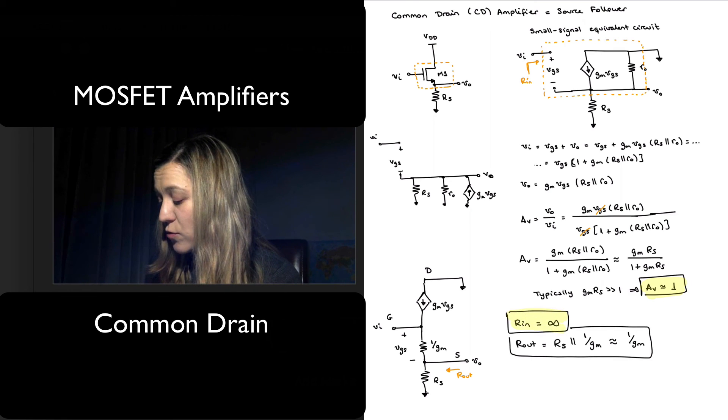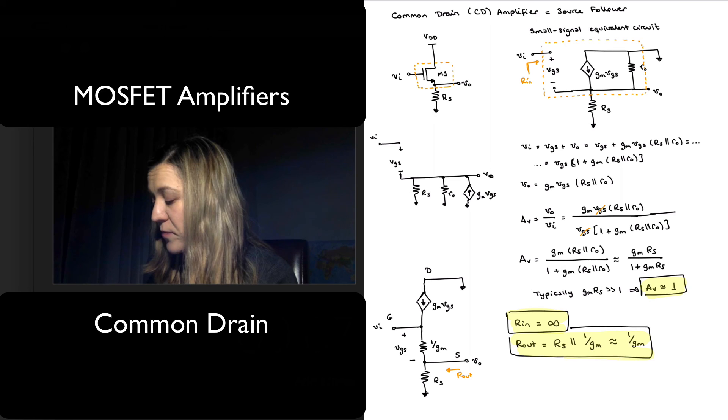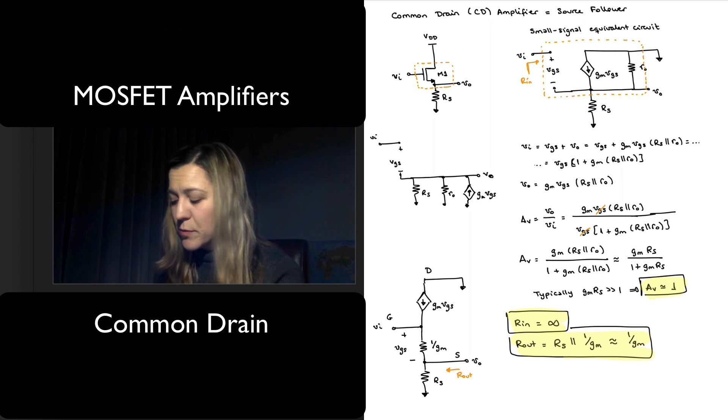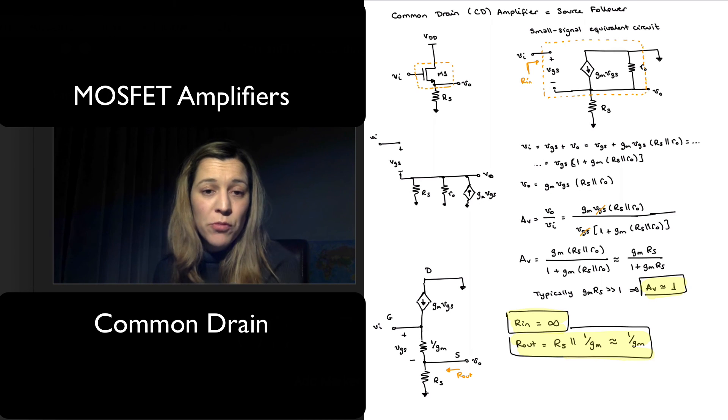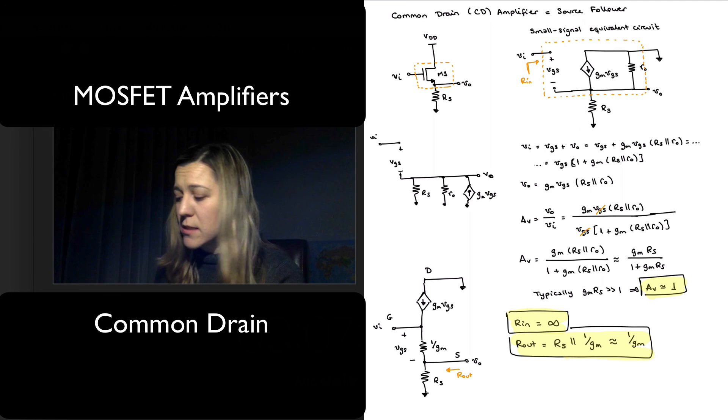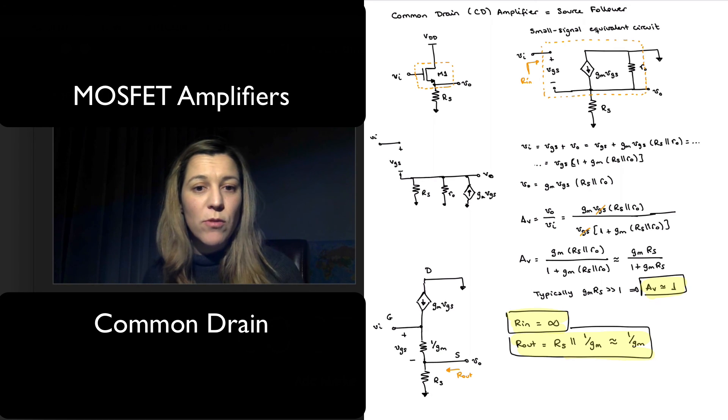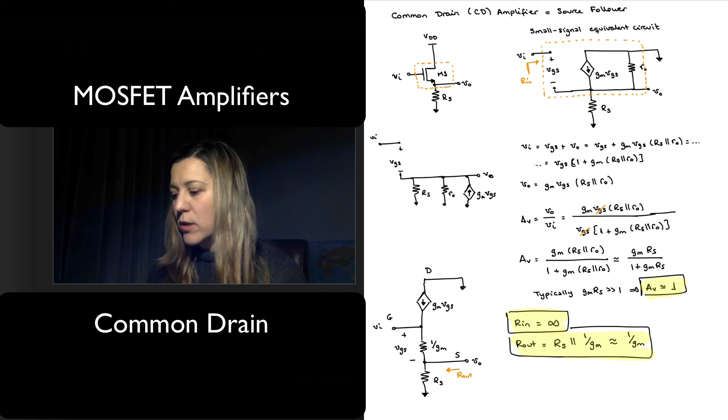Typical uses for this type of amplifier is going to be as a buffer between stages, for example. And that's because it has a very high input resistance, a very low output resistance. The gain is essentially 1. And so as a buffer stage between amplifiers to avoid loading effects, or even as an output stage to avoid loading by the output, or as an input stage, because it has the high input impedance, it will avoid loading at the input.